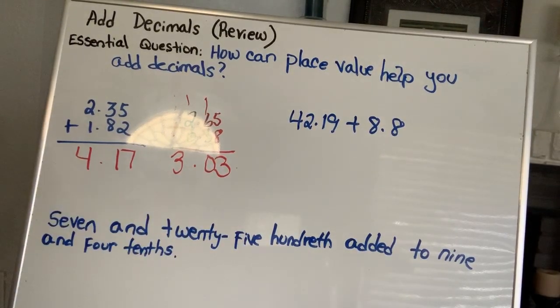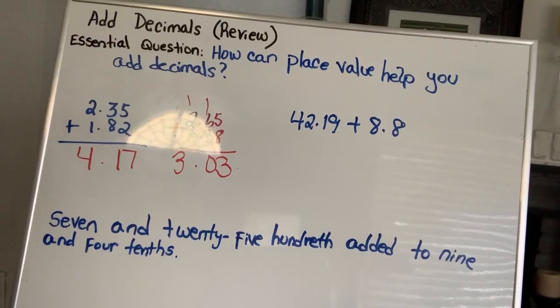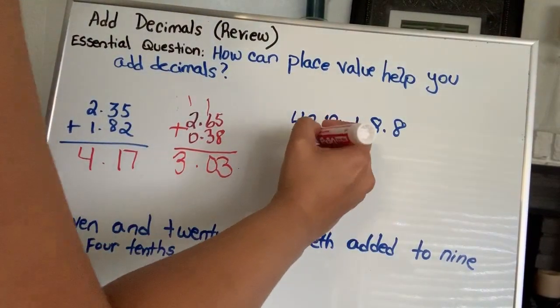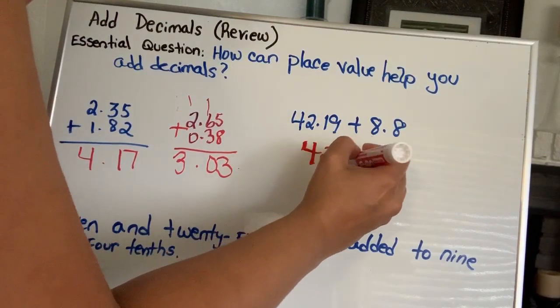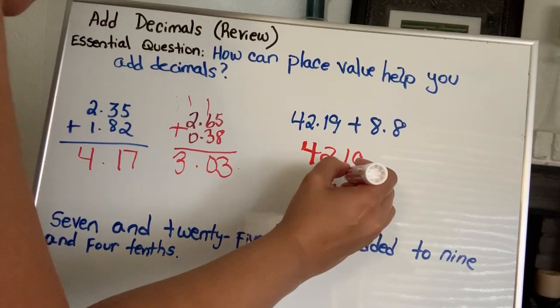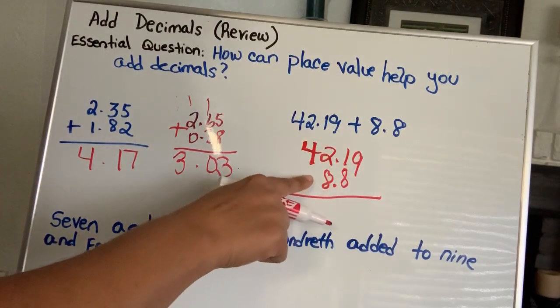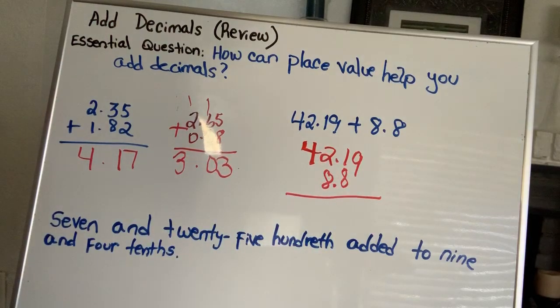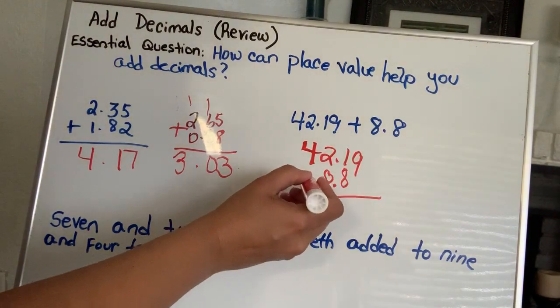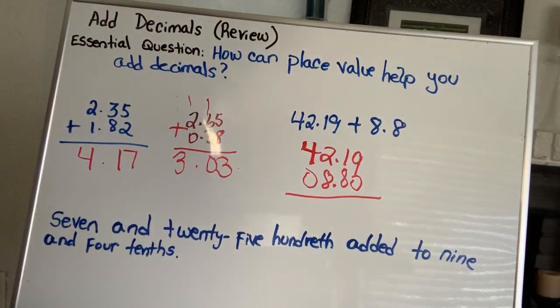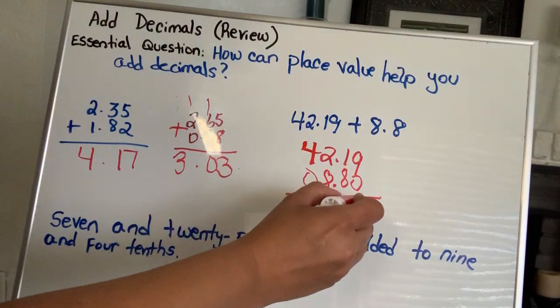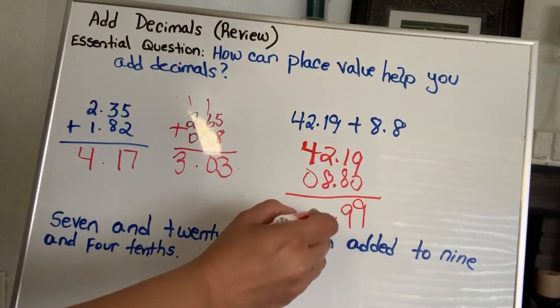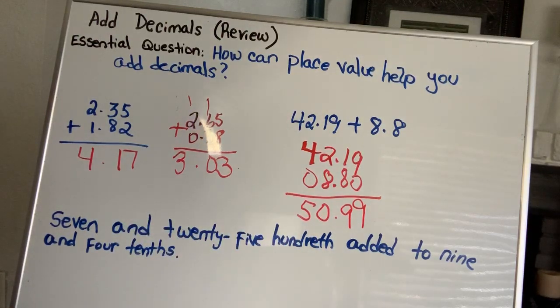Now, I want you to try this one by yourself. 42 and 1,900th, plus 8 and 1,8th. So, what happens on this one is that you got to remember, when you line them up, because you're lining them up by place value. So, you got nothing here and nothing here. So, what you can do to make it easier on yourself is you're going to add zeros to the extra spaces. That way, it gives you something to look at, and you don't have to be confused. Then, you can add them together, just like you would normally, and your answer is 50 and 99 hundredth.